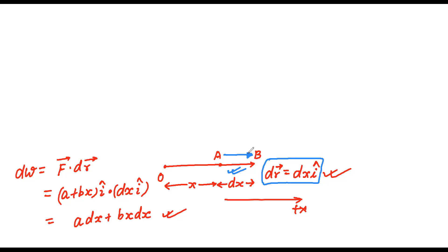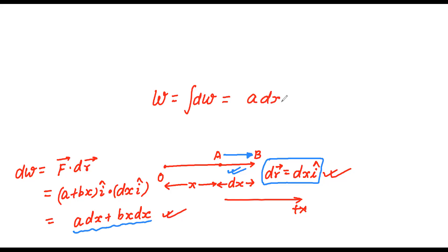So dW equals a dx plus bx dx. To find total work, we add all these small works — we integrate. The integral goes from the initial value of x, which is 0, to the final value, which is d: W equals integral from 0 to d of (a plus bx) dx.